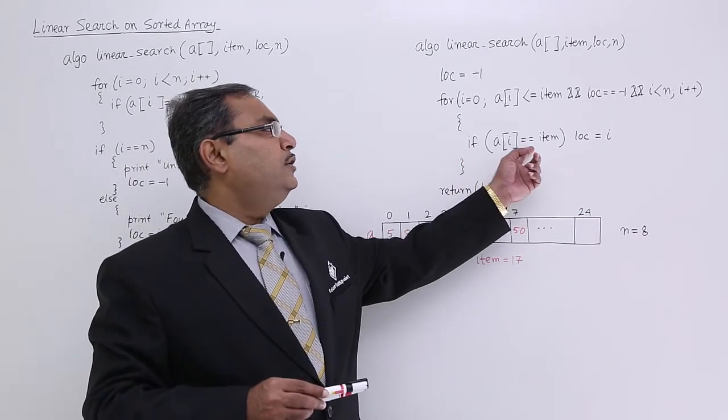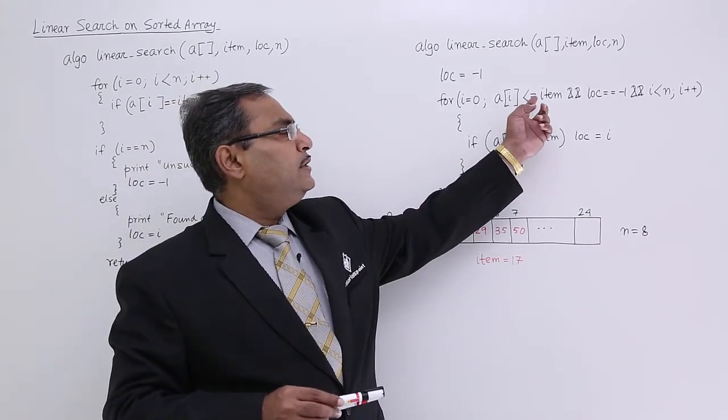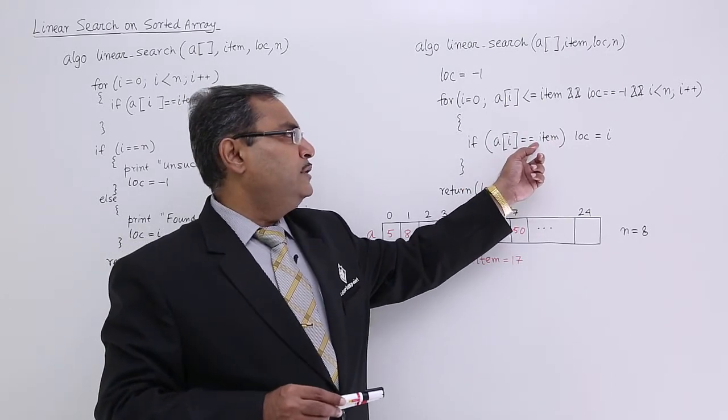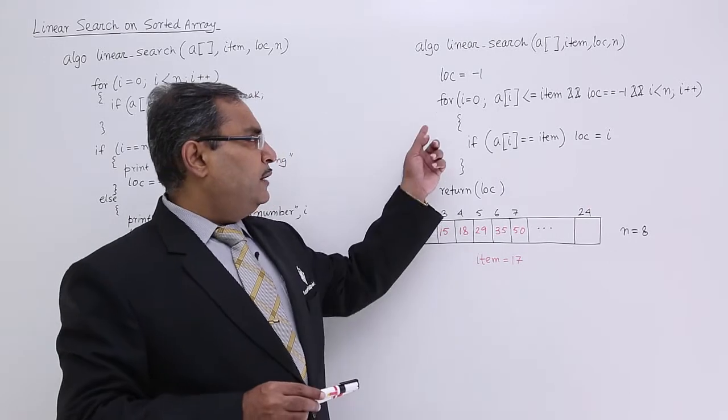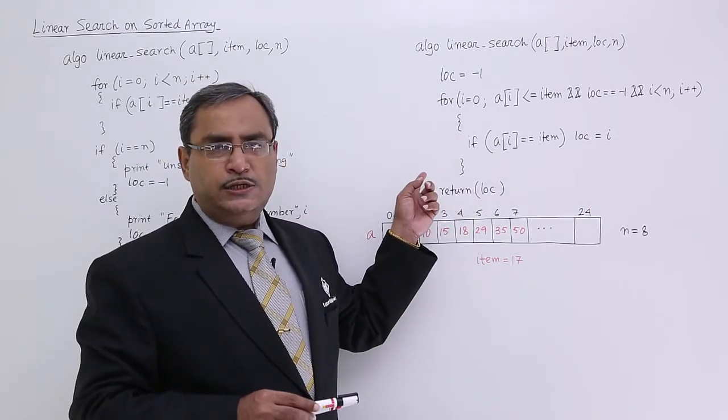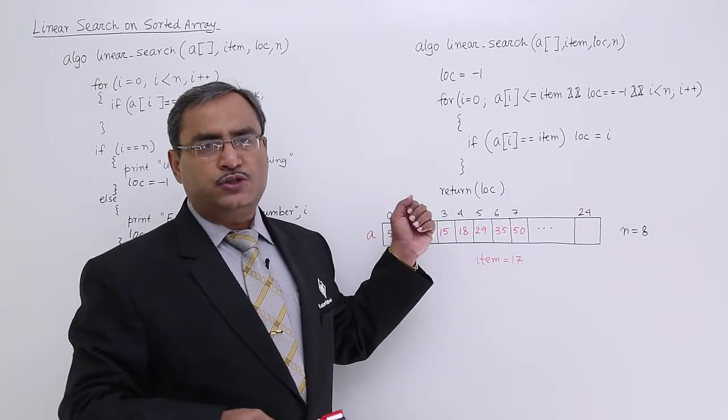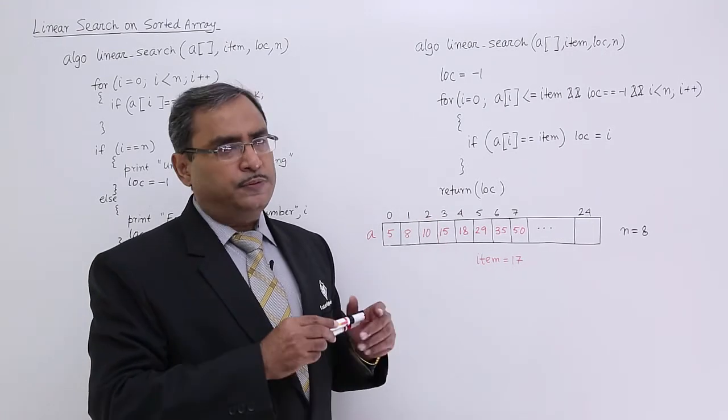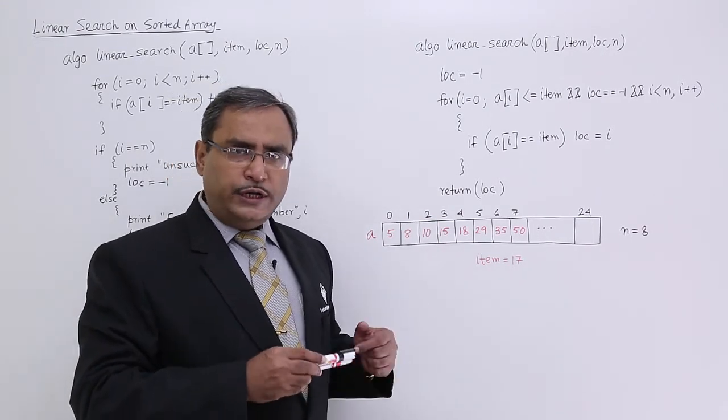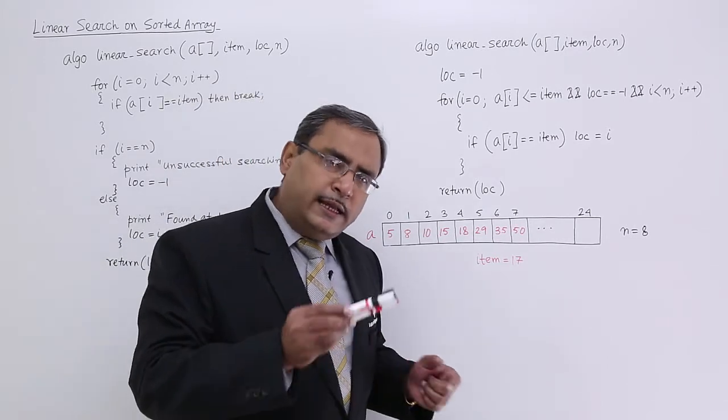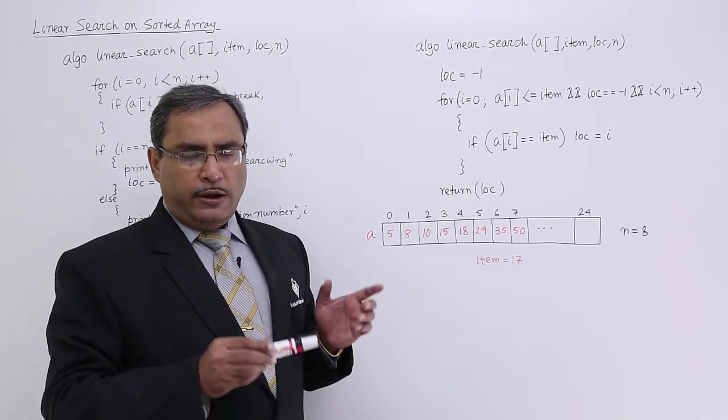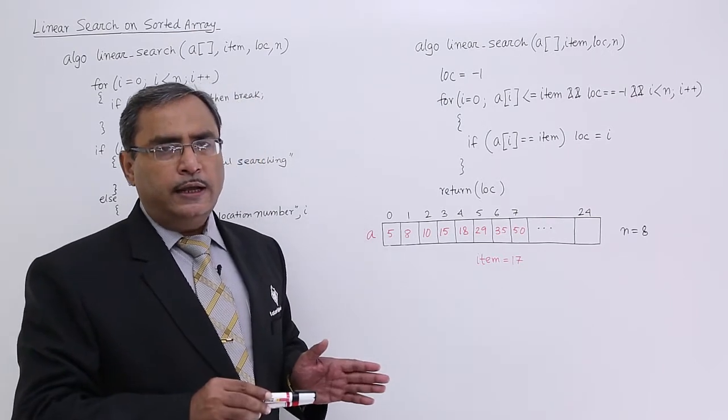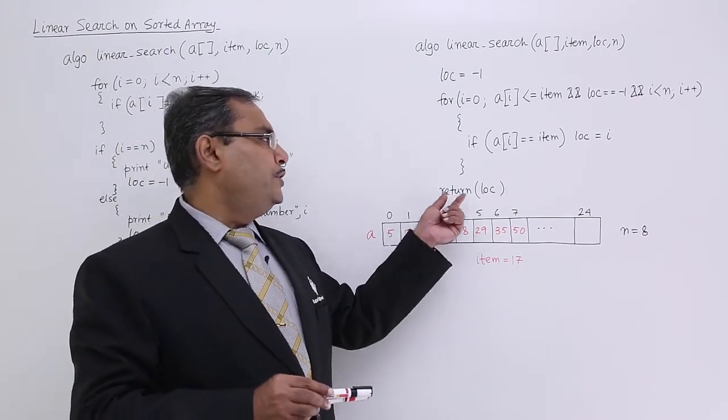If a[i] is equal to item, because when a[i] is equal to item, then also I am entering in this loop. So if a[i] is equal to item, then lock is equal to i. If the lock has not got initialized by any other value other than minus 1, that means the searching is unsuccessful. But if the lock has got initialized with the value other than minus 1 and ranging between 0 to n minus 1, that means I have got my data at that ith place. So return lock.